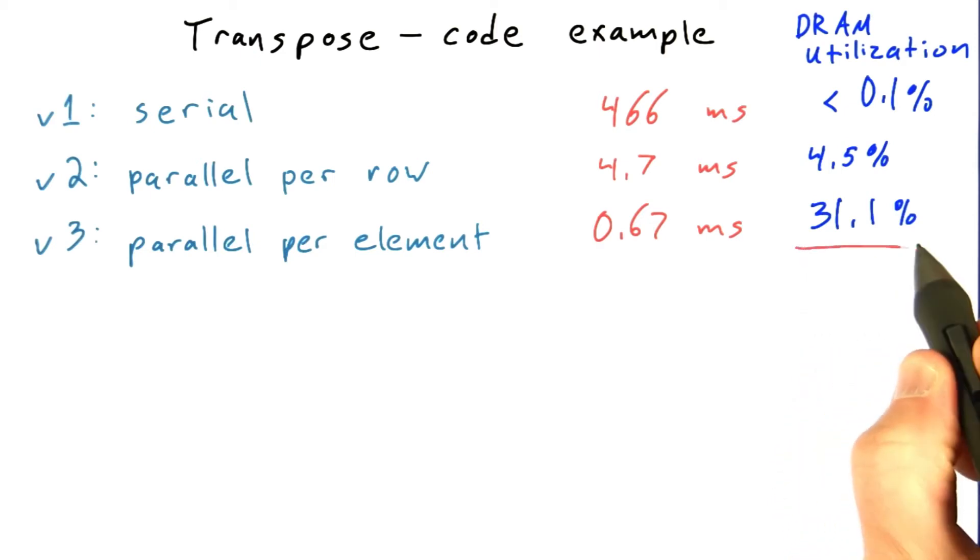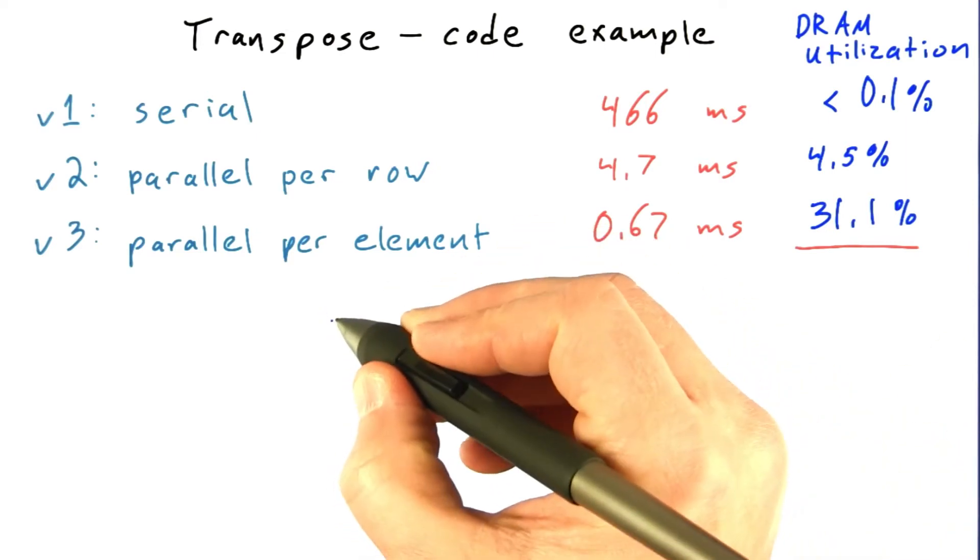So back to the question, why is this number so low? We can take a pretty shrewd guess that whenever you see really low DRAM utilization, really low percentage bandwidth, your first guess is always coalescing.